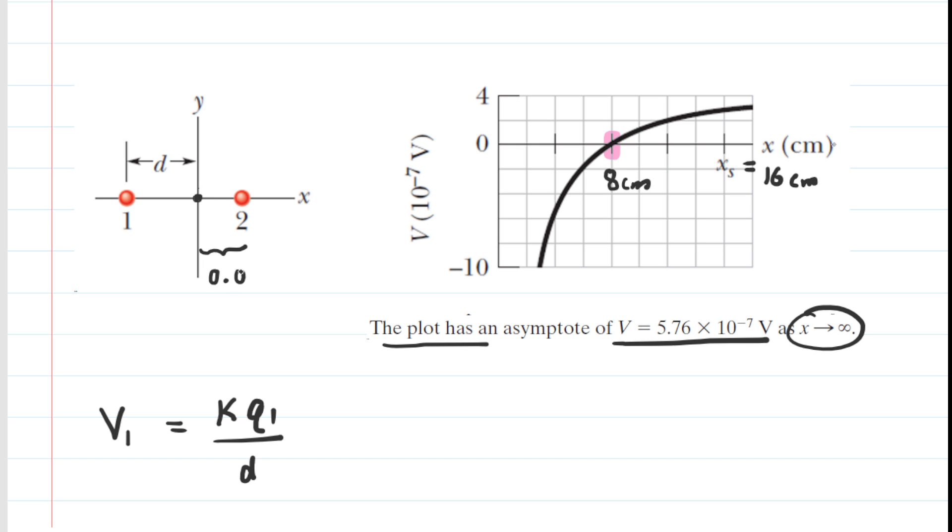Now 8 centimeters, of course, is 0.08 meters. We'll put that into a standard unit. And we can see that the total electric potential right now is 0. It is indeed 0.